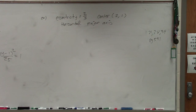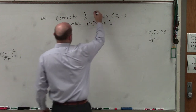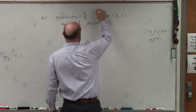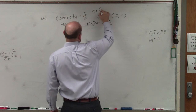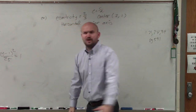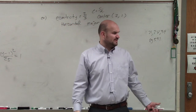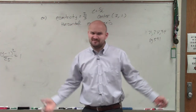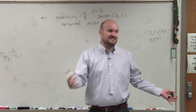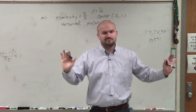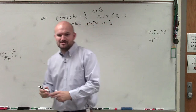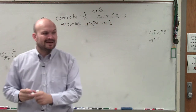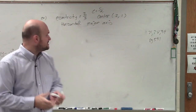As long as you guys know what the formula for eccentricity is — E equals C over A — which is not the hardest thing to memorize. You guys have memorized a lot of crazy stuff. Eccentricity: C over A. Pretty sure you can say it to yourself five times and you'll have it memorized.